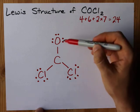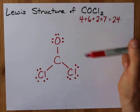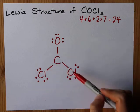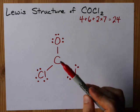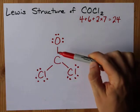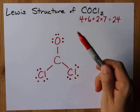And I've completed the octet on my oxygen. There's 8 electrons around it. Chlorine, there's 8. Chlorine, there's 8. But carbon does not have a full octet yet. It only has 2, 4, 6 electrons around it.